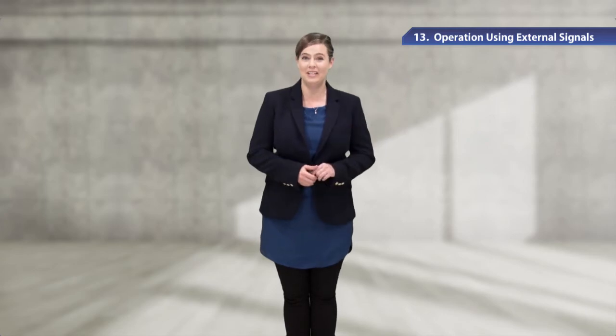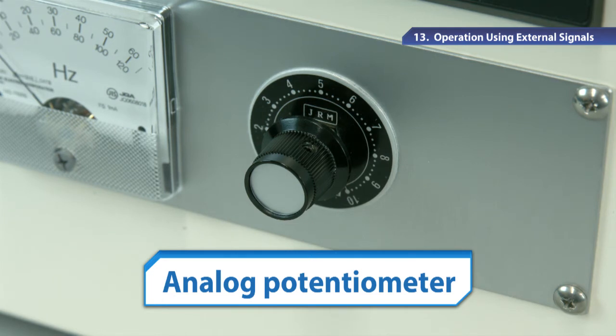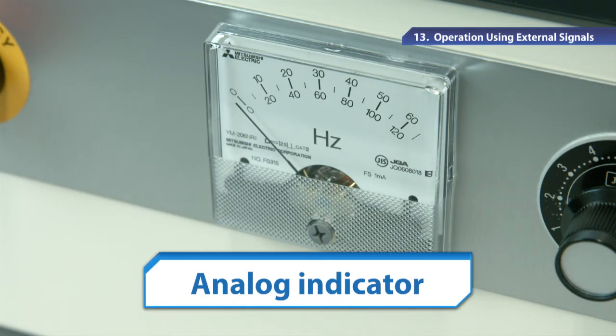The speed can be set to up to 15 levels with the preset switches for low, medium, and high speed. You can manually change the motor rotational speed by using an external potentiometer for analog signal. An analog indicator is also available for remote monitoring.